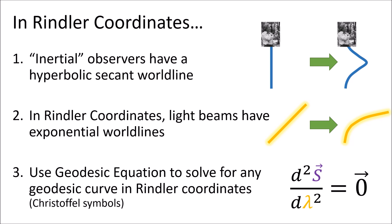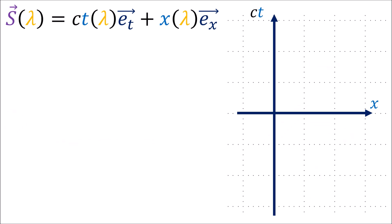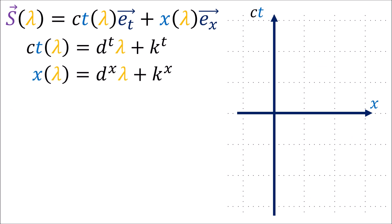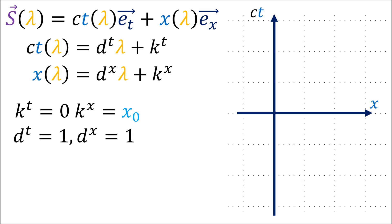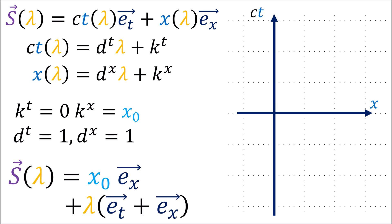Next, let's show that in Rindler coordinates, light beams have exponential world lines. Let's start again with our geodesic equation for inertial coordinates, and this time we'll take k_t equals zero, k_x equals the constant x0, and we'll take dt and dx to both be one. In this case, the initial position vector is x0 e_x, so it points completely in the direction of the x-axis. The initial direction vector is e_t plus e_x, so it points diagonally to the upper right at an angle of 45 degrees.